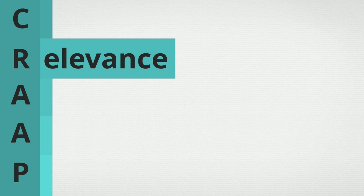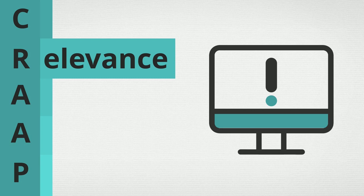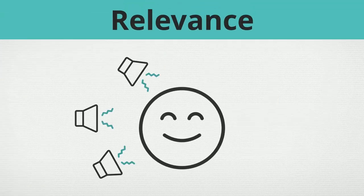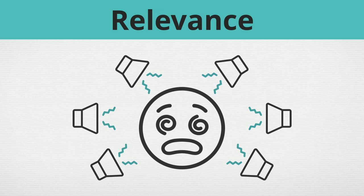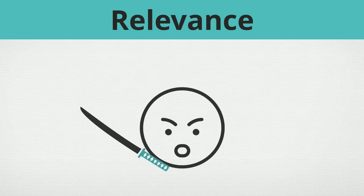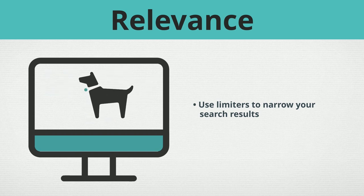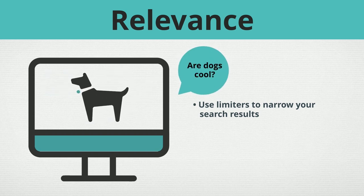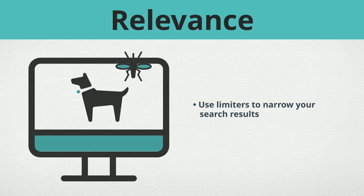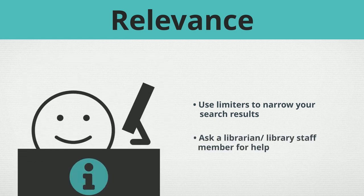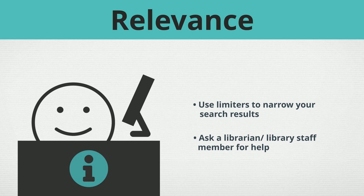Relevance. How important is this information for your current needs? When it comes to finding information, there can be a lot of noise getting in the way of what you want to learn. It can be annoying and even a bit overwhelming. But there are ways to cut through the clutter. You can use limiters to narrow your search results even further. Ask yourself if the information is even related to your question or topic. Information that's unrelated to your topic can be a distraction. Stay focused. You can also ask a librarian or other member of the library staff questions until you find what you need. They really don't mind.